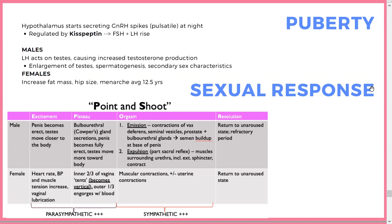Sexual response: remember 'point and shoot' — P for parasympathetic (point, i.e., erection/arousal), shoot for sympathetic (ejaculation/orgasm).